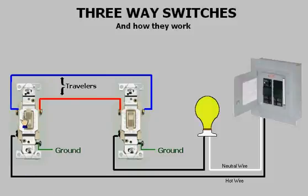When a person switches one of the three-ways, the light comes on. When he switches the other, the light goes off.